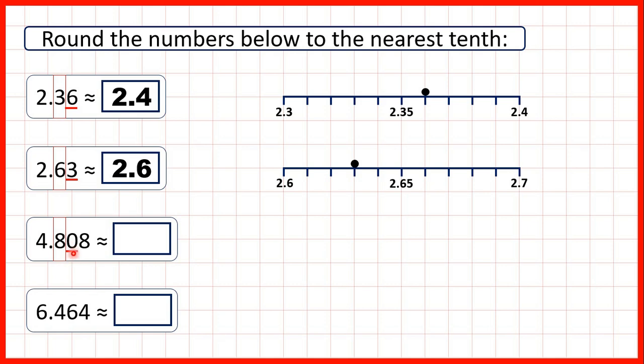Now we have a zero so we're rounding down. That means the 8 stays the same and digits to the left of what we've circled stay the same as well. So 4.808 rounds to 4.8.